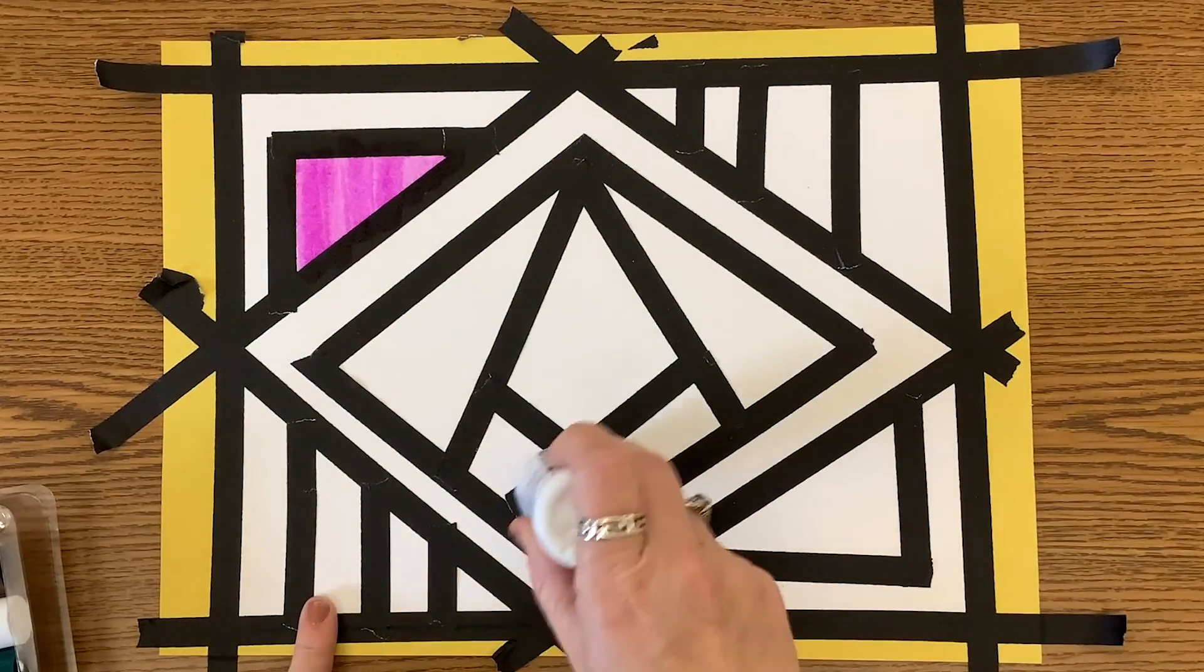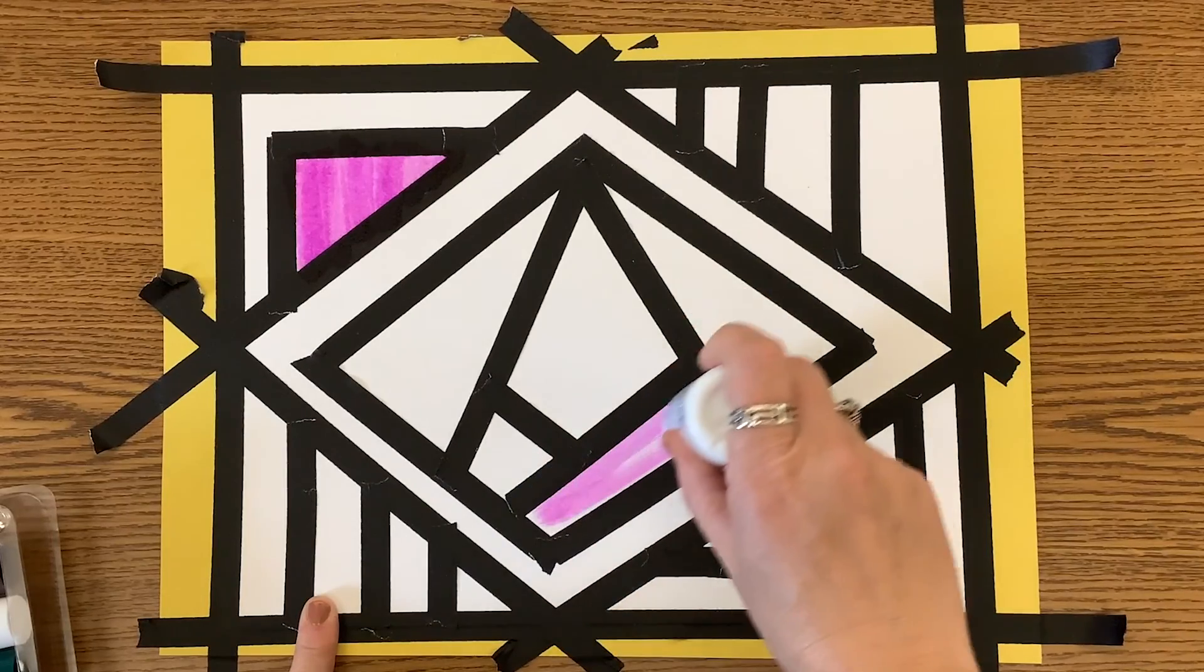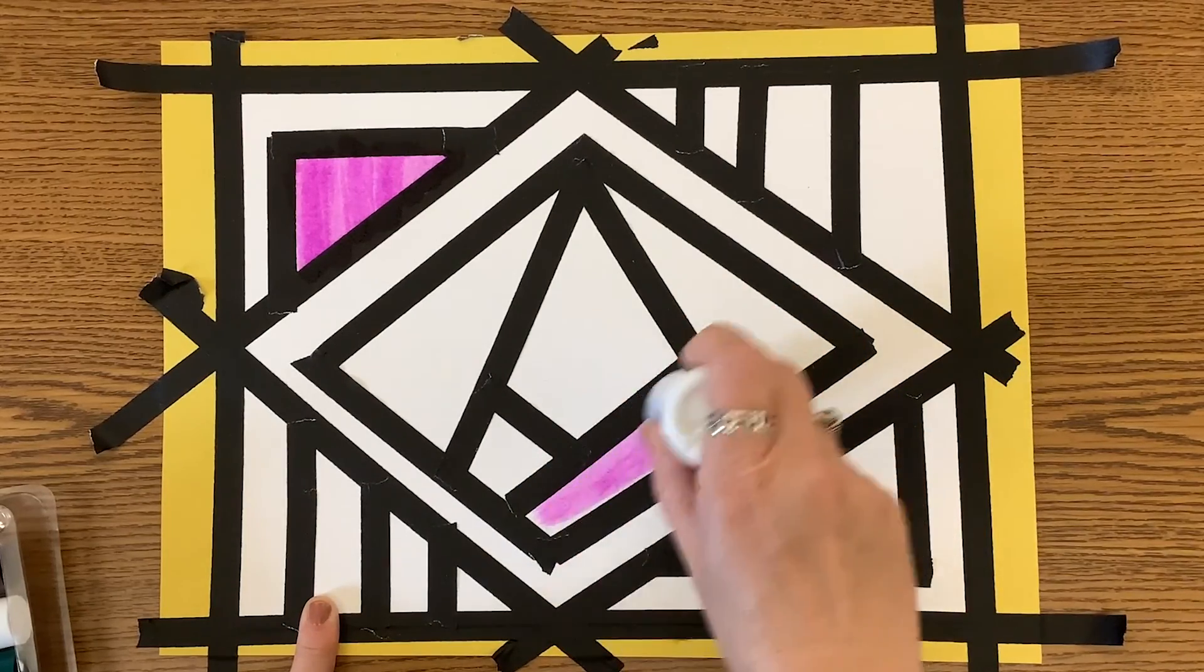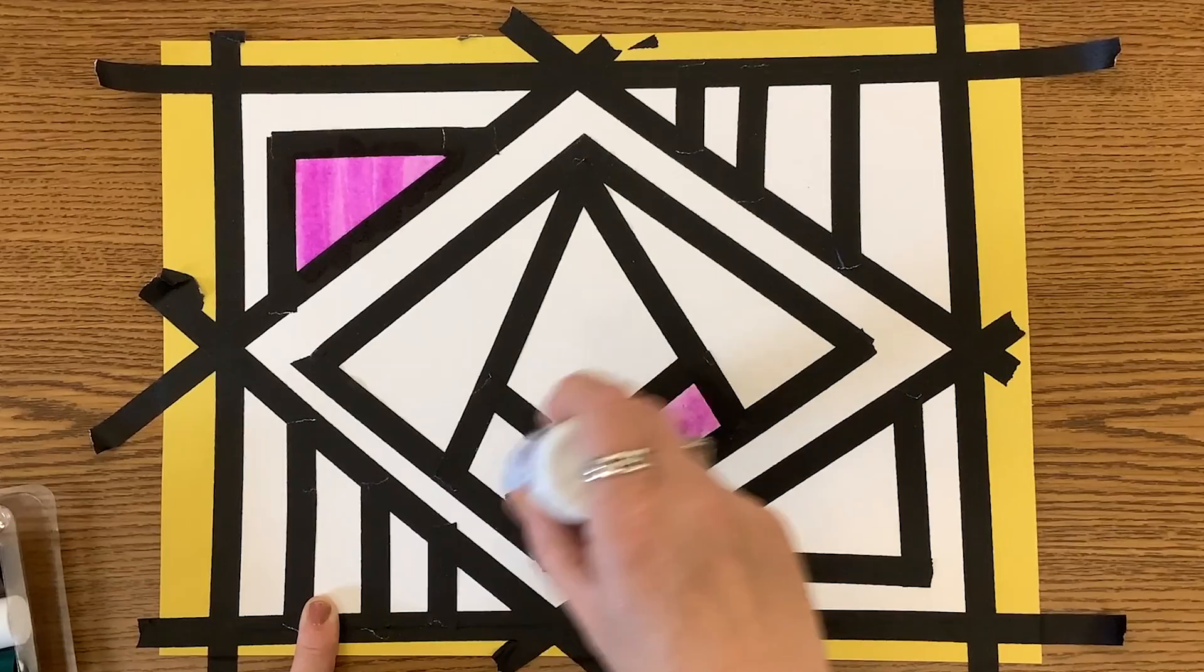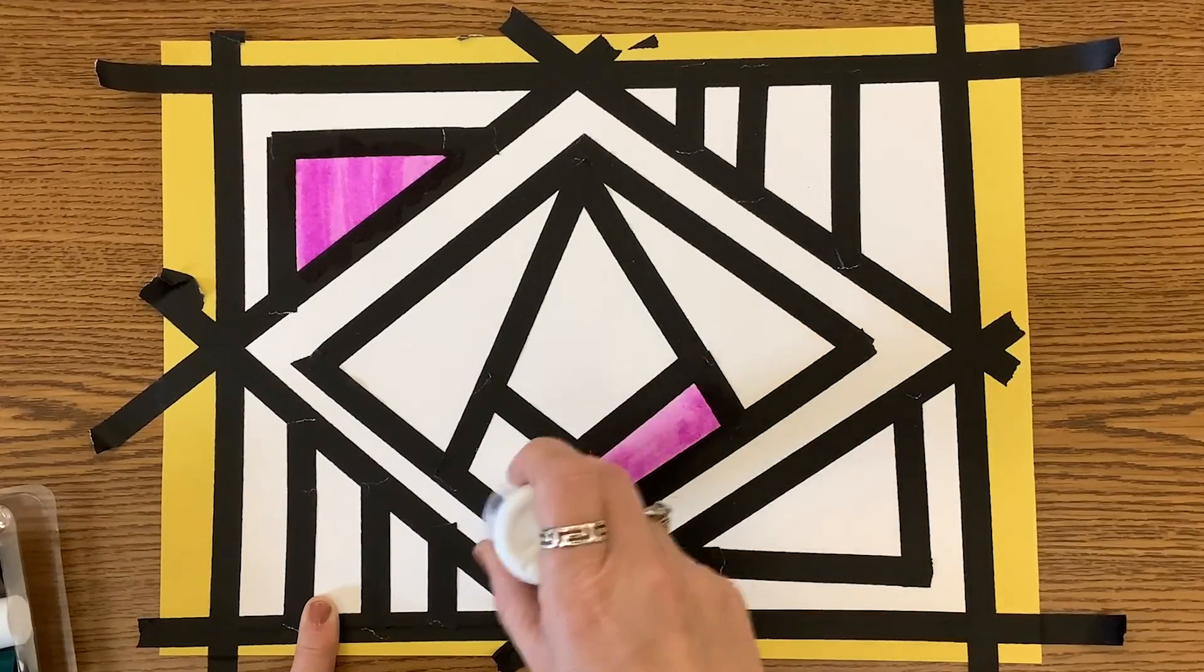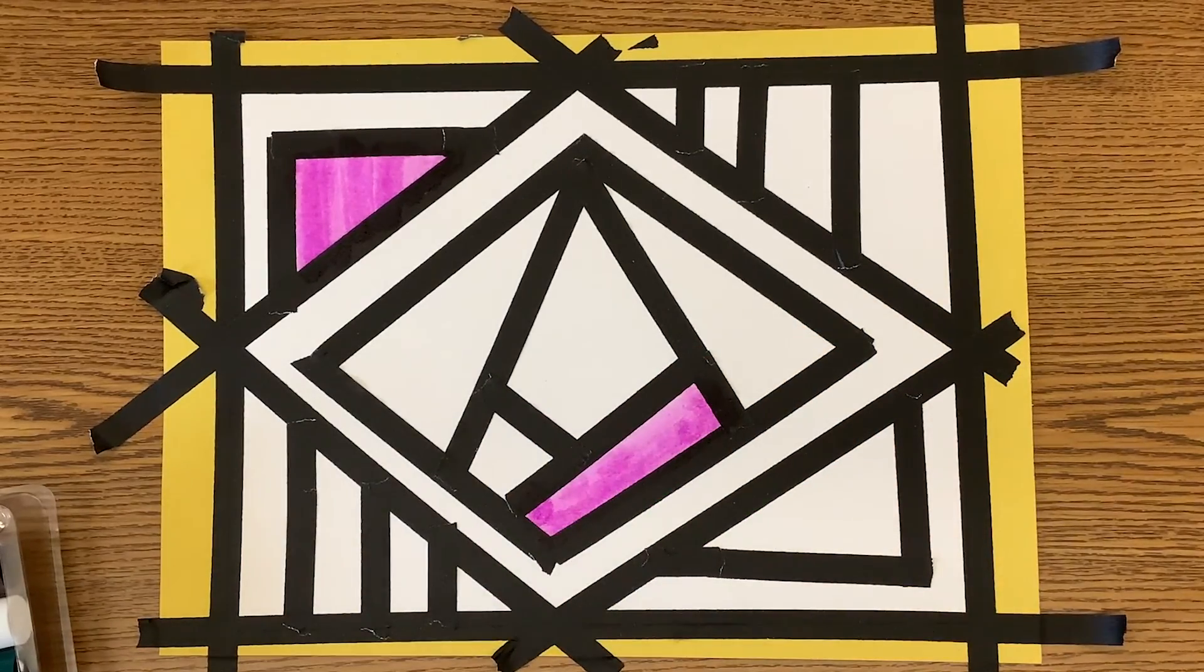Each space created by the tape is going to be filled with a different color, so make sure we're not mixing colors in one space. Each area that's outlined by your tape is one solid color.